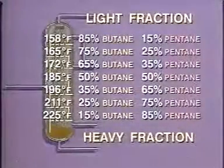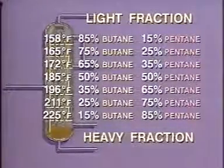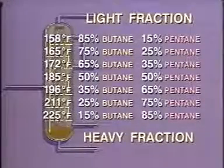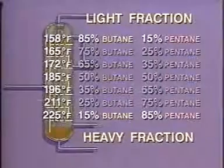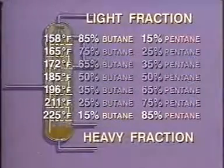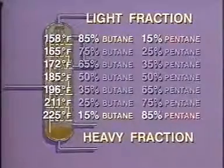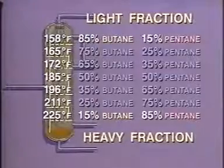In a distillation column, hot rising vapors contact a cooler descending liquid on a series of trays. As a result of this contact, light components in the liquid vaporize and heavy components in the vapor condense. This cycle gradually isolates a different fraction on each tray. The composition of each fraction is determined by the tray temperature and the column pressure. Since the lowest temperature occurs at the top of the column, a light fraction is formed here. A heavy fraction is isolated at the bottom of the tower where the temperature is highest.